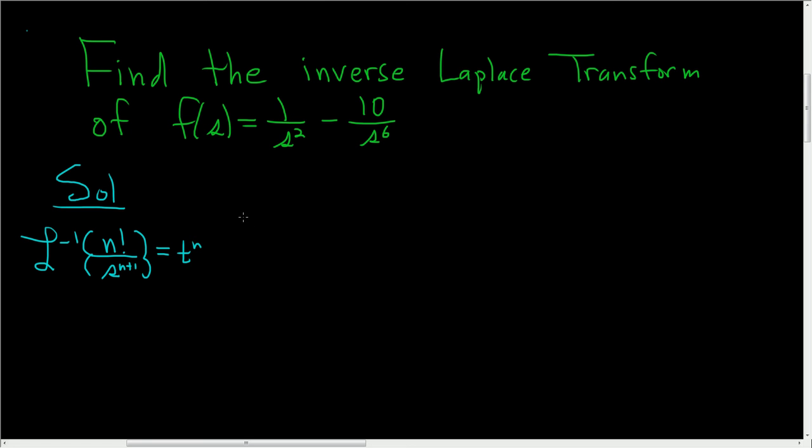That's the formula we'll use in this problem. So taking the inverse Laplace of 1 over s squared minus 10 over s to the 6th, we can use the fact that it's linear and write it as follows.